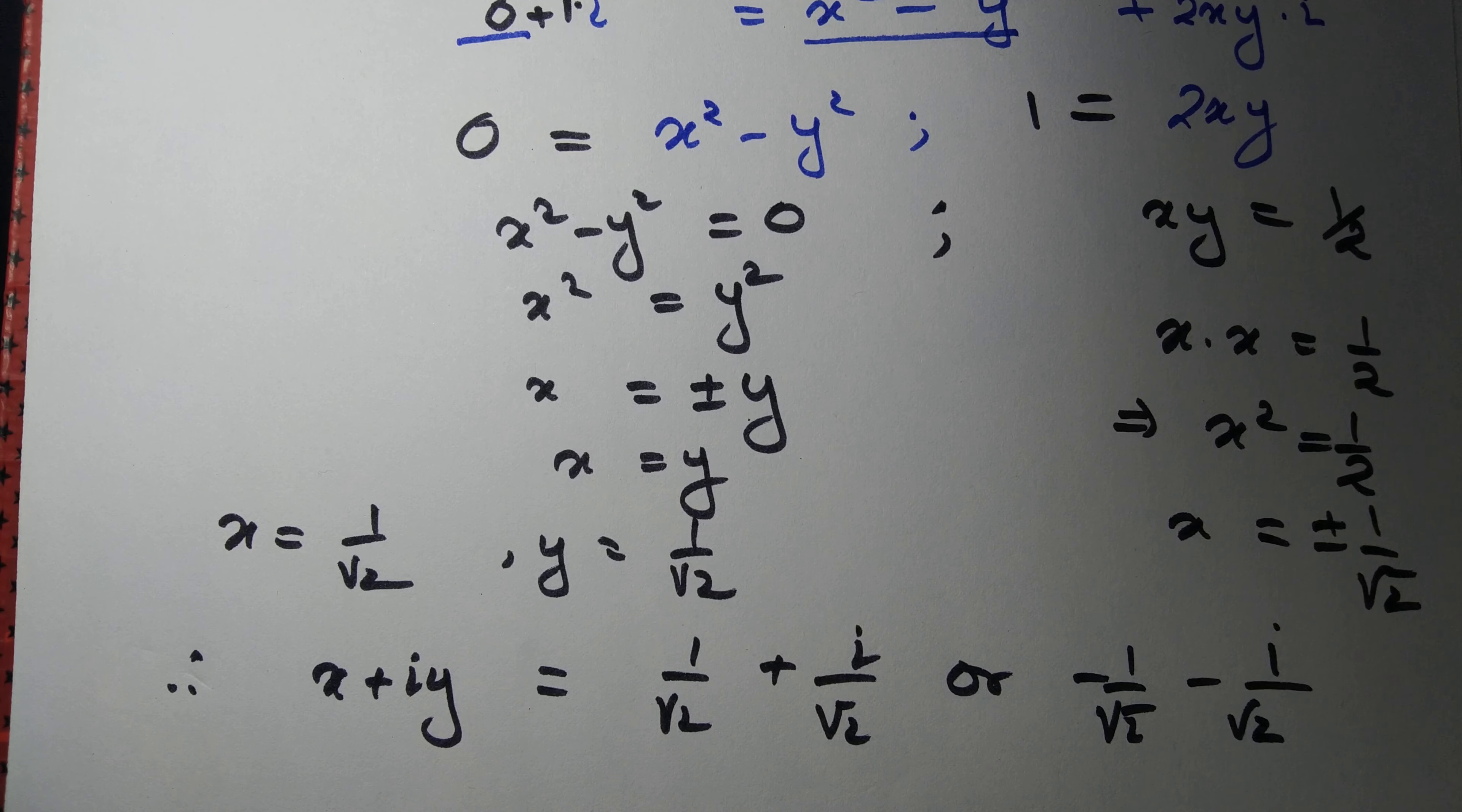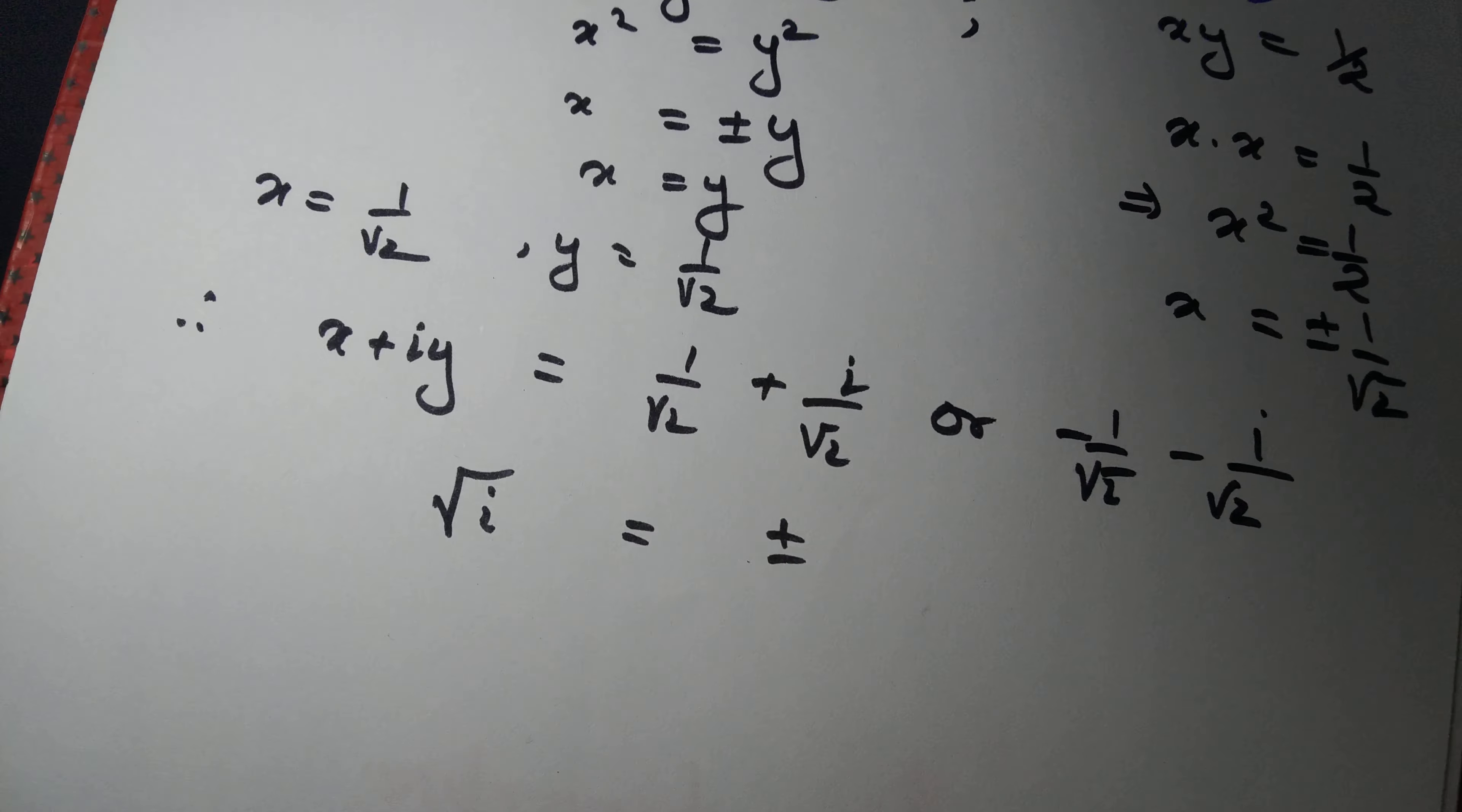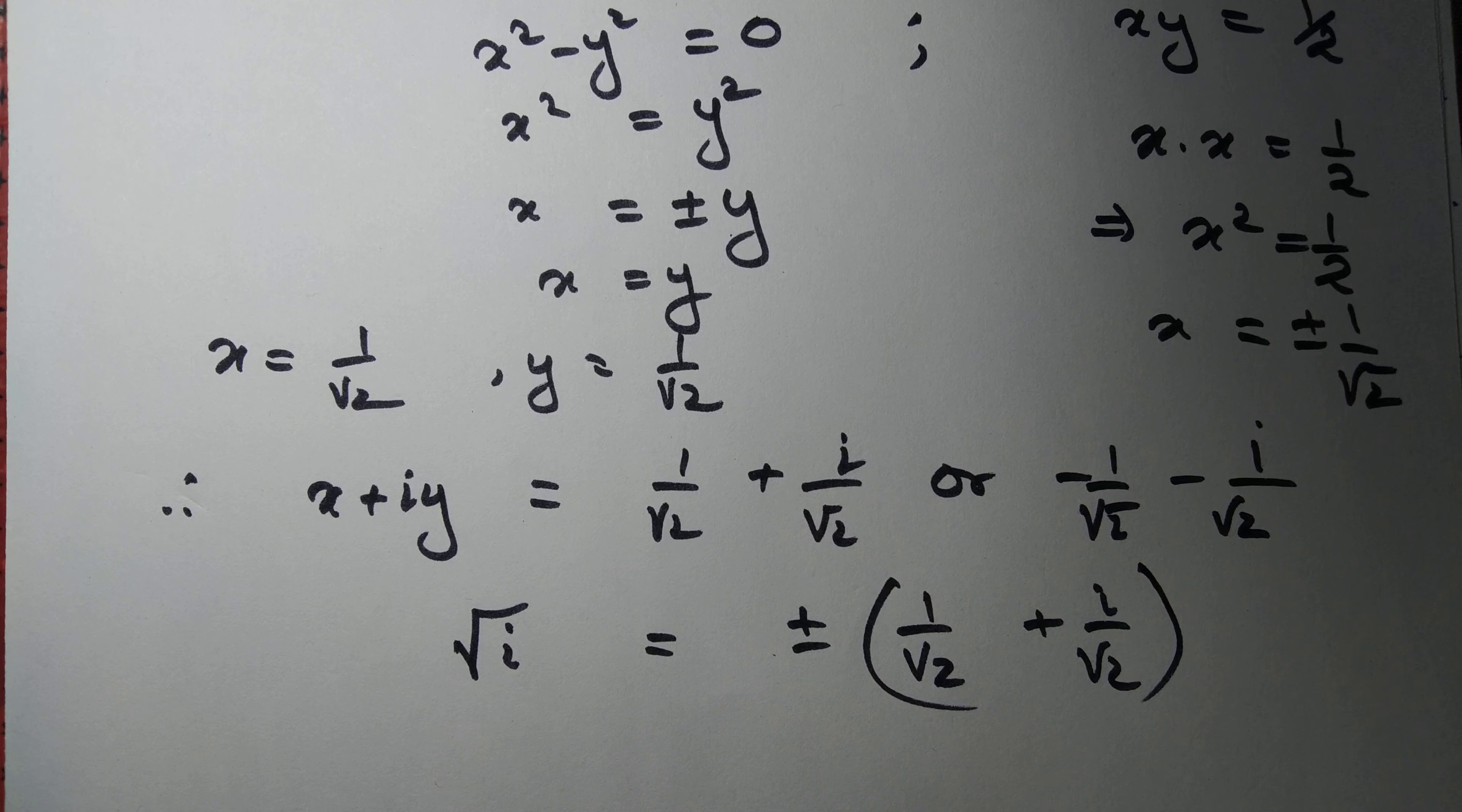So we have found two roots of i. Therefore, root i equals plus or minus 1 by root 2 plus i by root 2. And we are done.